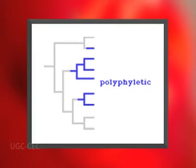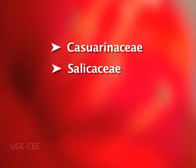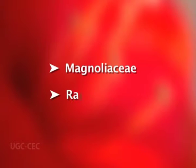Apocarpy is regarded as a primitive feature and syncarpy as an advanced feature. The evolution of angiosperms is regarded as polyphyletic. Families such as Casuarinaceae, Salicaceae, Betulaceae, Fagaceae, etc., with naked unisexual flowers and syncarpous gynoecia, are placed before families such as Magnoliaceae and Ranunculaceae. Polypetaly and monochlamydous were unified under the single group Archichlamydeae.